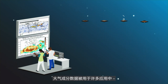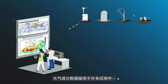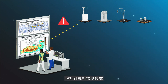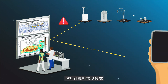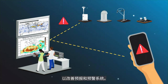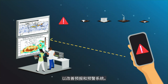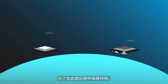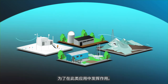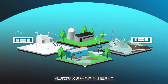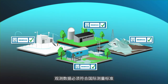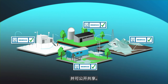Atmospheric composition data are used in many applications, including computer prediction models, to improve forecasting and early warning systems. To be useful in such applications, observational data have to meet international measurement standards and to be openly shared.